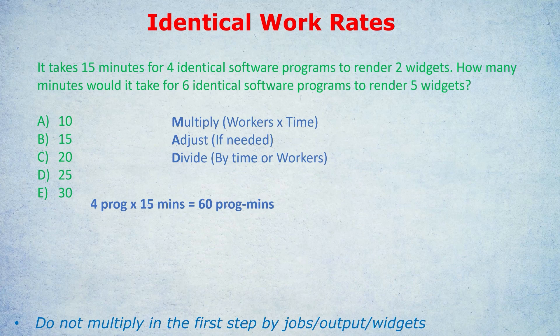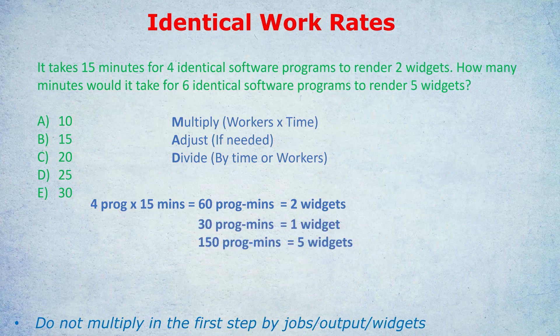Yes, we remember to label this — we achieved two widgets in this time, and that label is important for this question. Now we need to adjust. In the second sentence, they ask us to render five widgets. So we need to adjust these 60 program minutes, because that was only for two widgets. I always divide to get down to one and then multiply to scale up. Divide both sides by two: that's 30 program minutes for one widget. Then multiply by five: 150 program minutes for five widgets. We must adjust to match the goal the question sets.